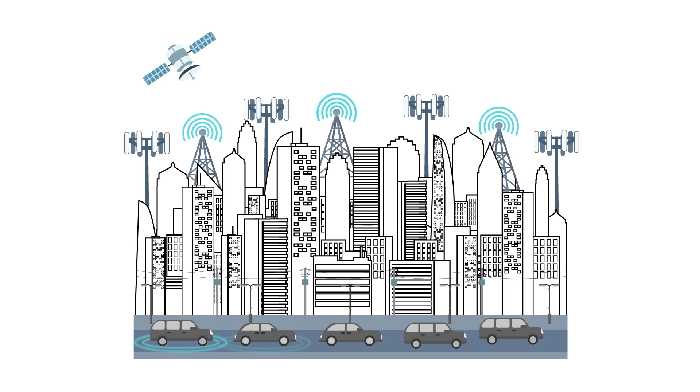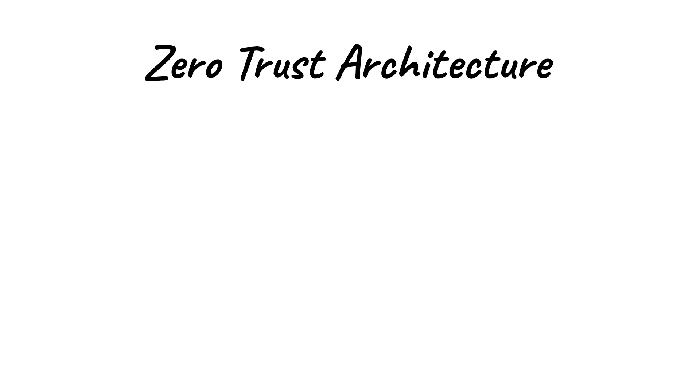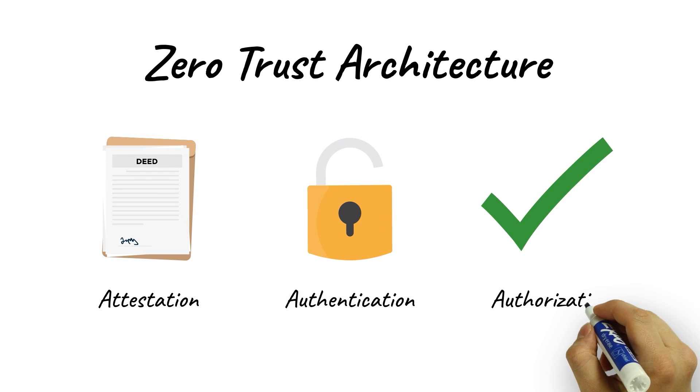It starts with the vetting process for things, the digital devices used in connected critical infrastructure, to determine if a thing is trustworthy. In Zero Trust terms, that's attestation, authentication, and authorization.